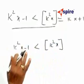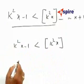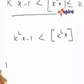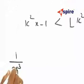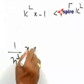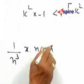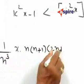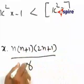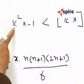Now, taking the sigma and dividing by n³, you will have (1/n³) times (n(n+1)(2n+1))/6. I am using the sum of the squares here.